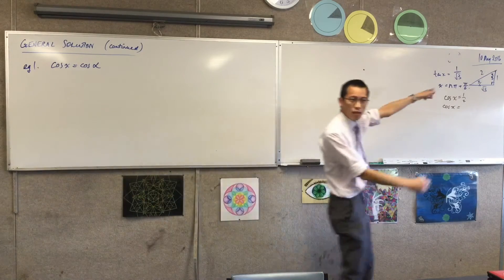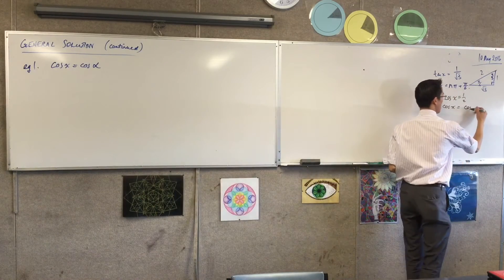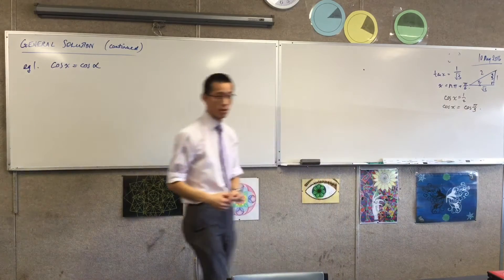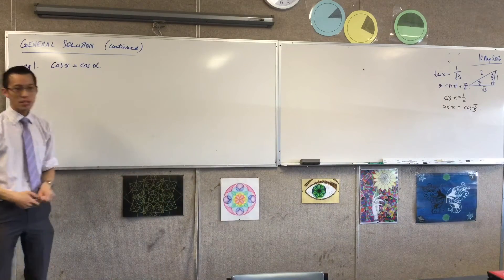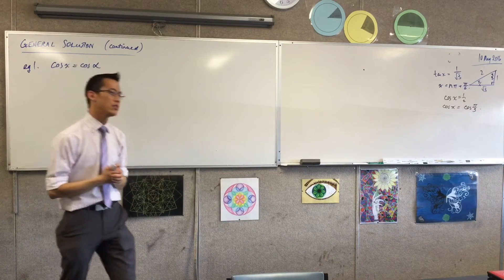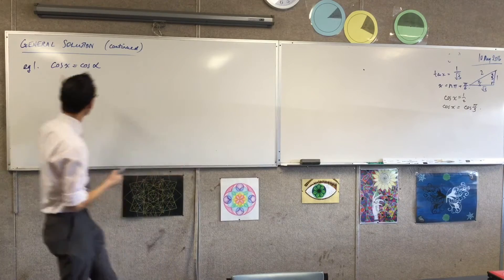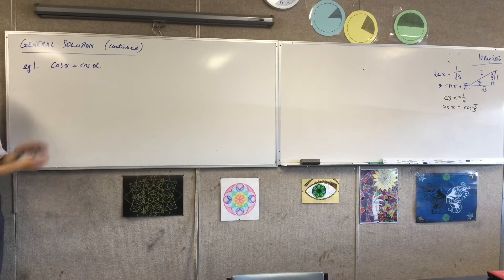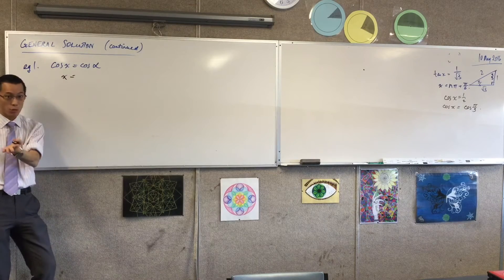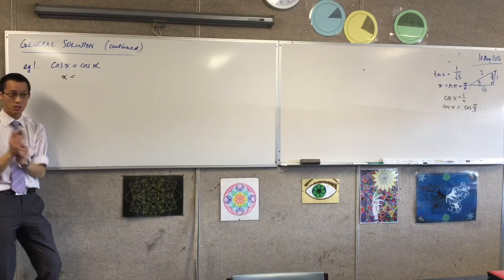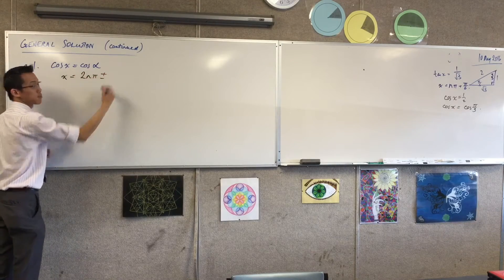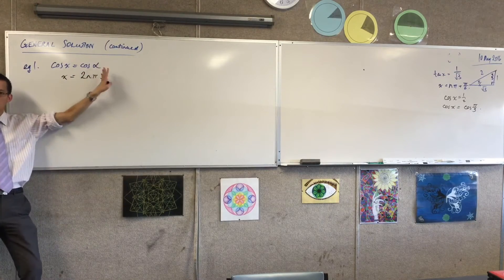Cos inverse, cos of that. So I can write this right-hand side like so. Do you agree with that? Cos of pi on 3 is a half. So when you see cos of something, cos of something else — how will we use the inverse trig ratios here to help us write out the answer for this? What am I going to do when I start off with x equals? Start me off with quoting the beginning of the general solution form. It's a two-line answer. You told me before it's plus or minus.